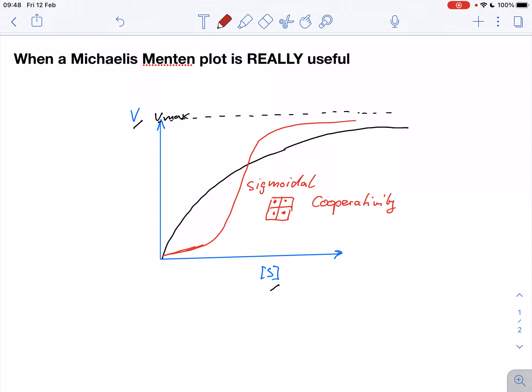So if we see an S-shaped curve, a sigmoidal curve like that, we know that the enzyme does not behave like a Michaelis-Menten enzyme, and that there is a good indication that this enzyme actually shows cooperativity. So that's one thing where we can immediately see when we plot rate versus substrate concentration that there is something different with this enzyme.